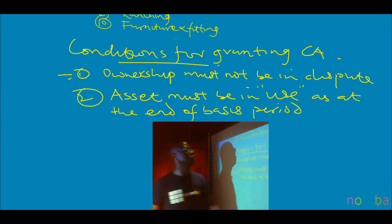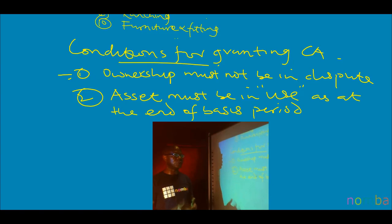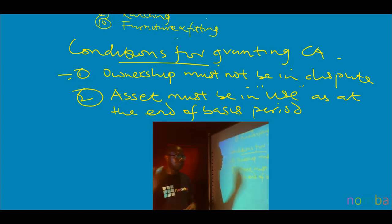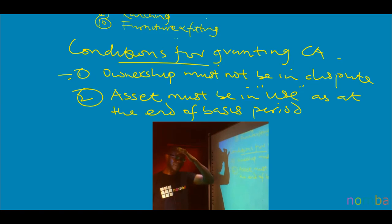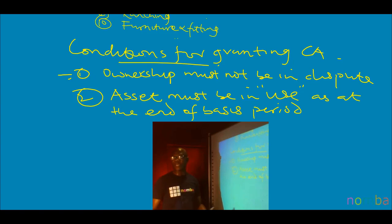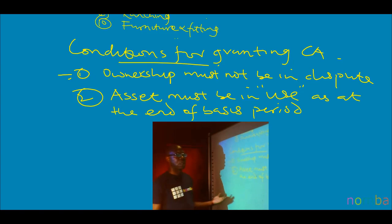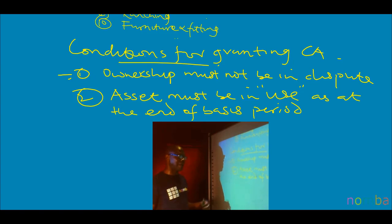Use here has other meanings. During a period of temporary disuse, the asset is still considered in use. For example, you acquired an asset, maybe it was imported into the country and is still at the wharf — it has not been cleared. We can still regard it as being in use. Or it is cleared and brought into the factory but has not been installed; during the period of installation, the asset is still in use and we can start calculating capital allowance for it. Or there was a machine breakdown — the machine was not in use — we still say it is in use for the purpose of capital allowance.